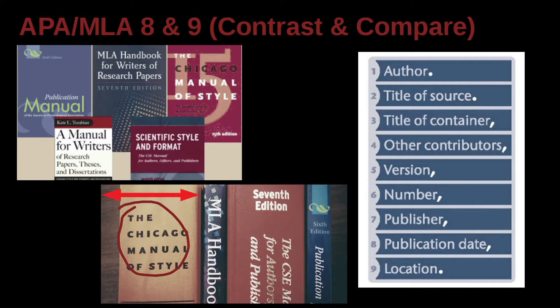That is one thick book. In general, MLA tends to be thinner. MLA tends to have less clear rules, whereas the APA does have more rules.